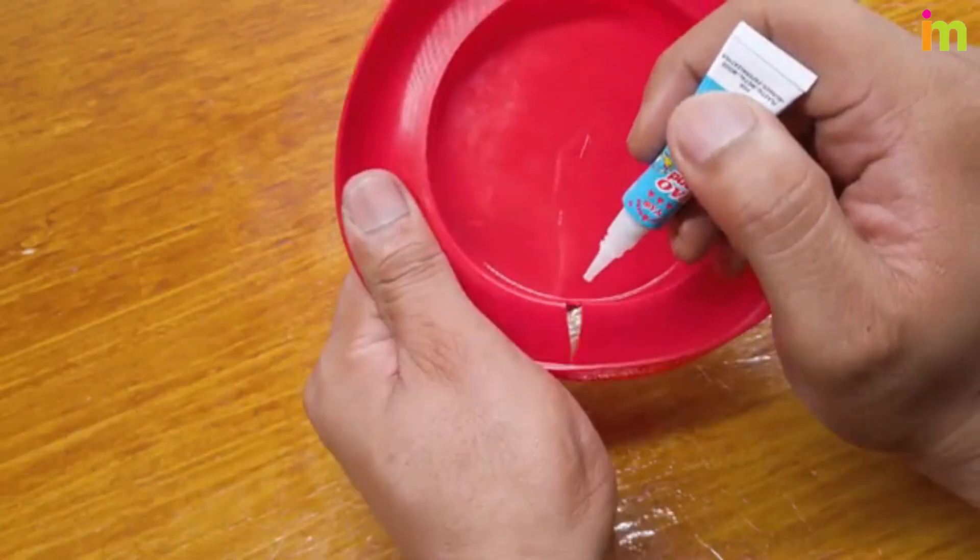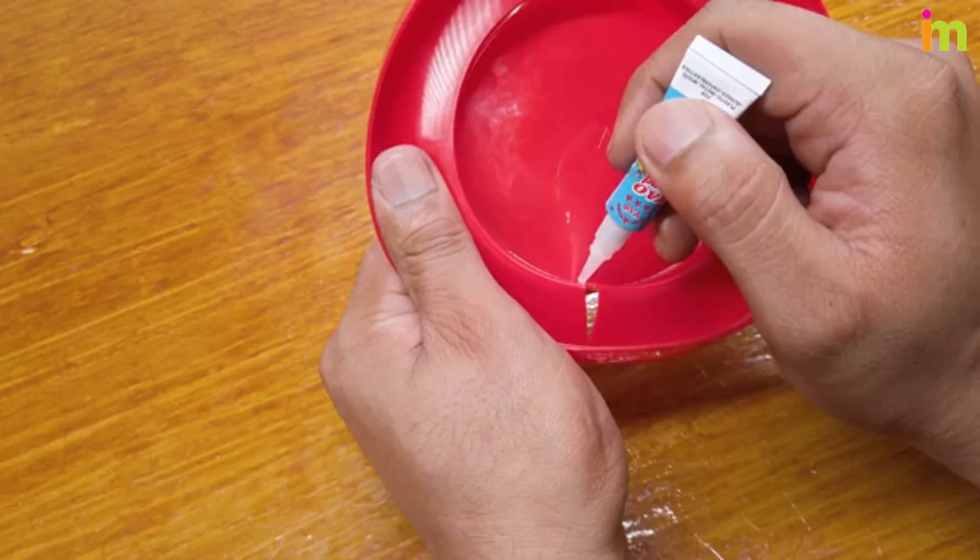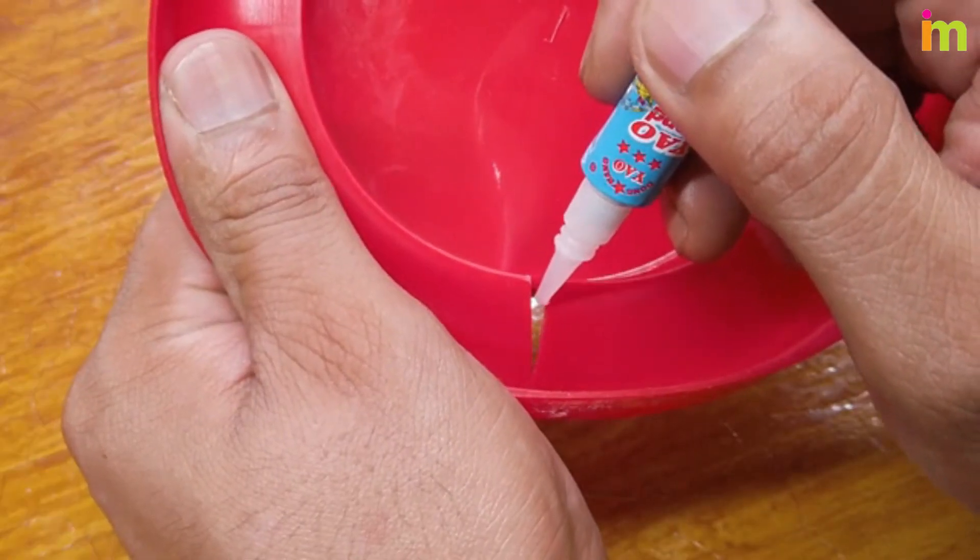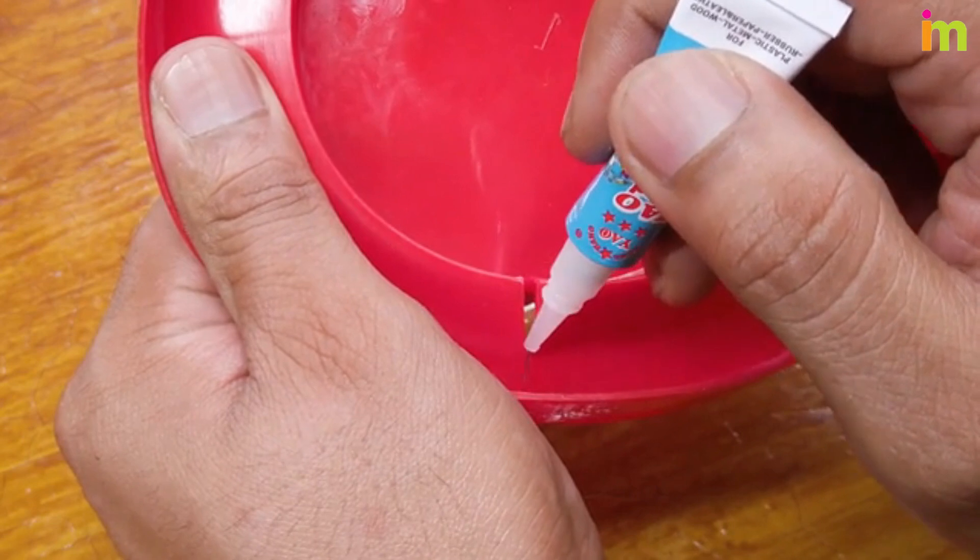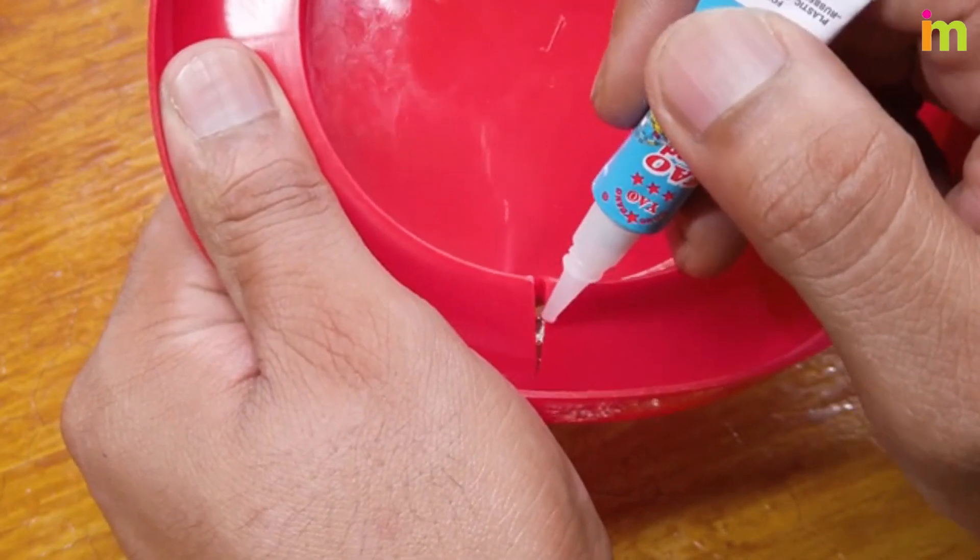Squeezing the tube gently, spread a layer over the edges you will reconnect. Keep a cloth or wipe nearby in case you pour too much and dab any excess glue immediately to prevent it from hardening.